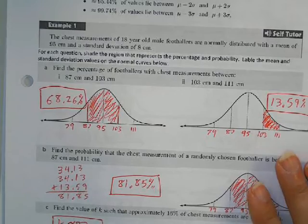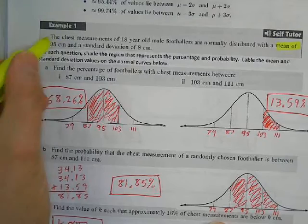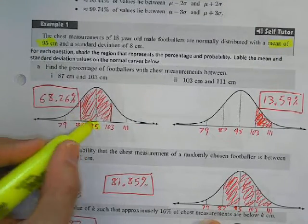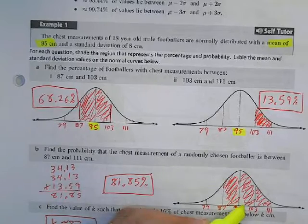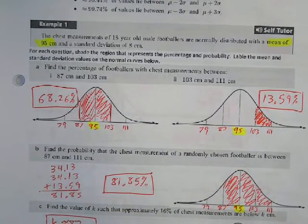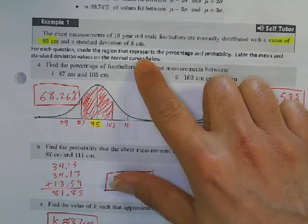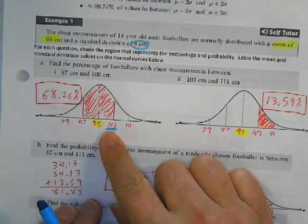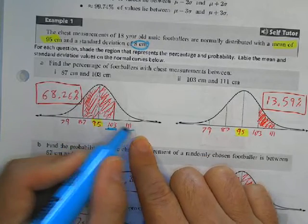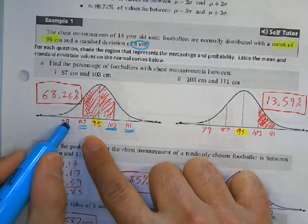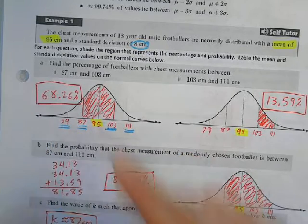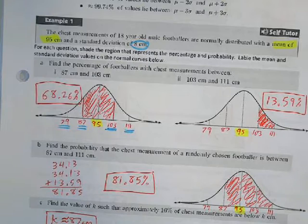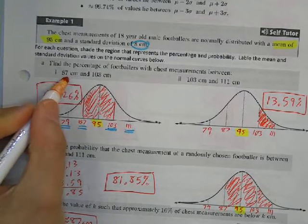For this example, the mean is 95 centimeters, so I put 95 in the center of the curve. The standard deviation is 8, so I add and subtract 8 incrementally: going right gives 103 and 111; going left gives 87 and 79. The question asks for the percentage of measurements between 87 and 103.